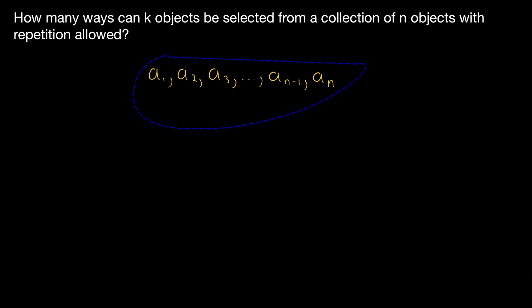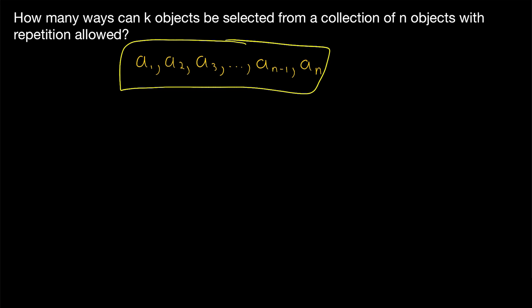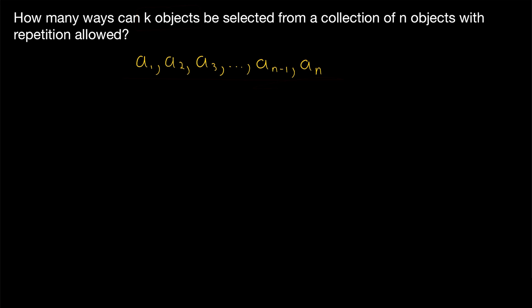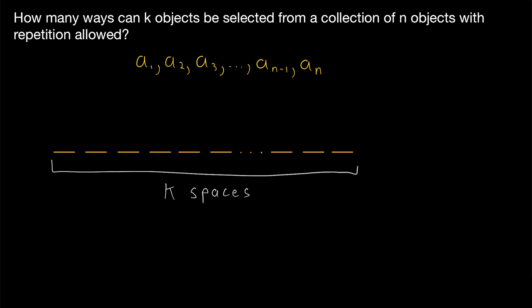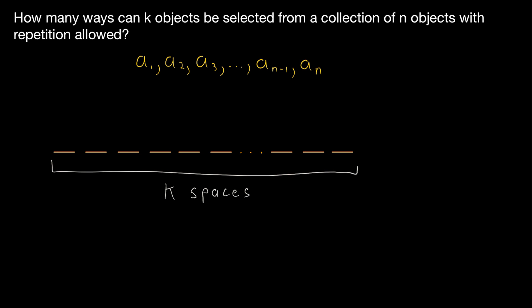No more dilly-dallying. Let's go over a very cool solution to this problem. Let's say we've got a collection of n objects: a1, a2, all the way through aN. Suppose that I've selected k of these objects, and repetition is allowed, so I've probably selected some objects multiple times. How could I communicate the combination of objects that I selected to you? One way is like this: I could give you k spaces and fill them in with the objects I selected.